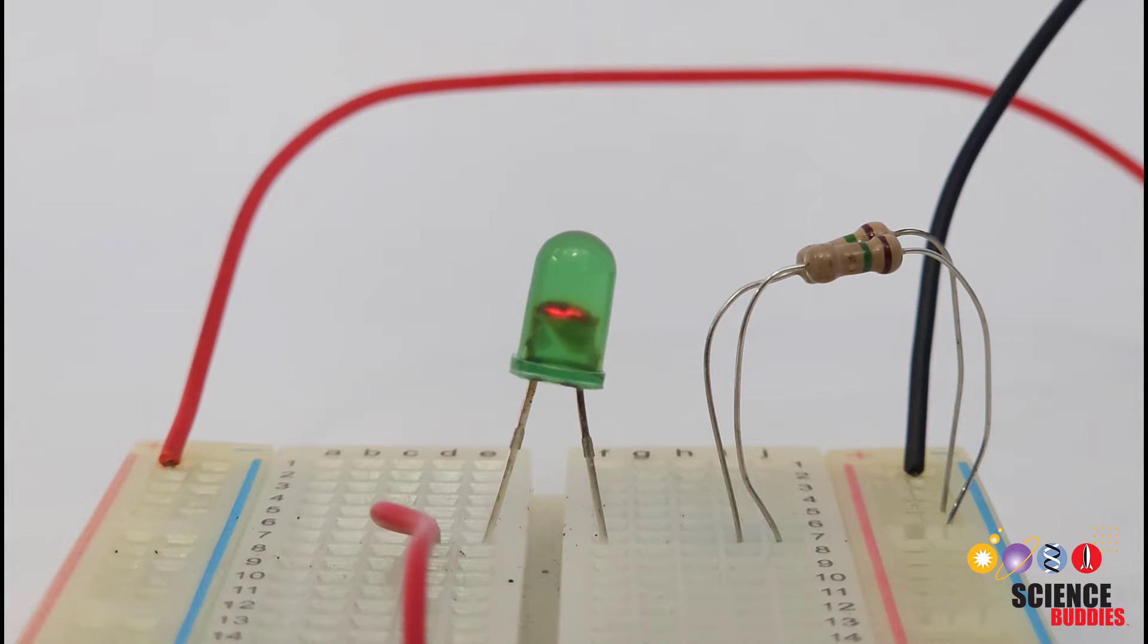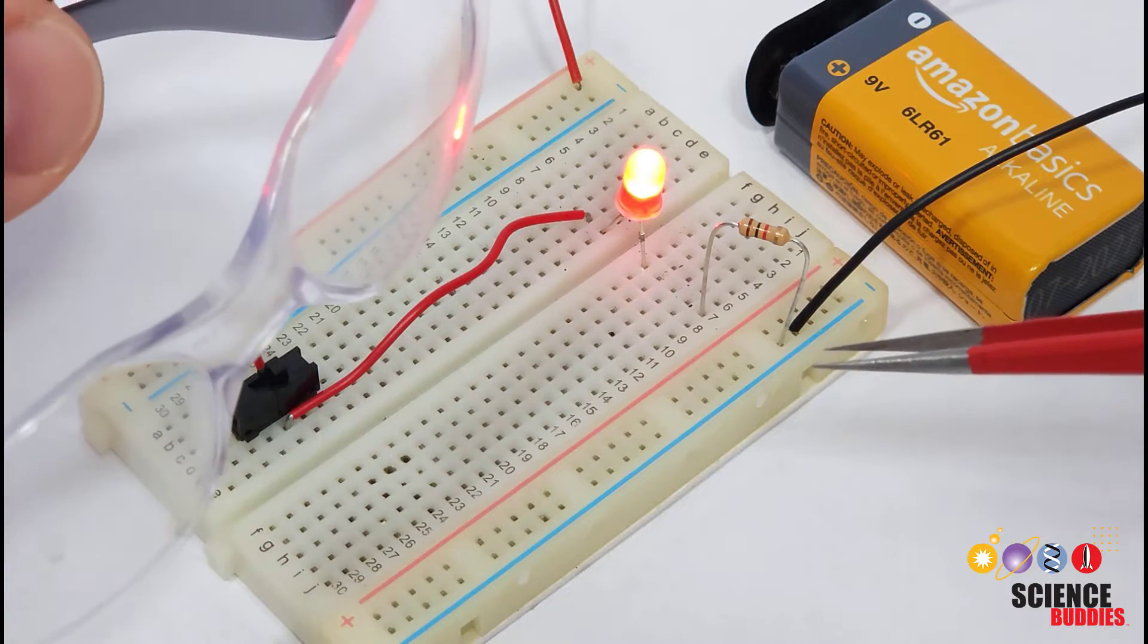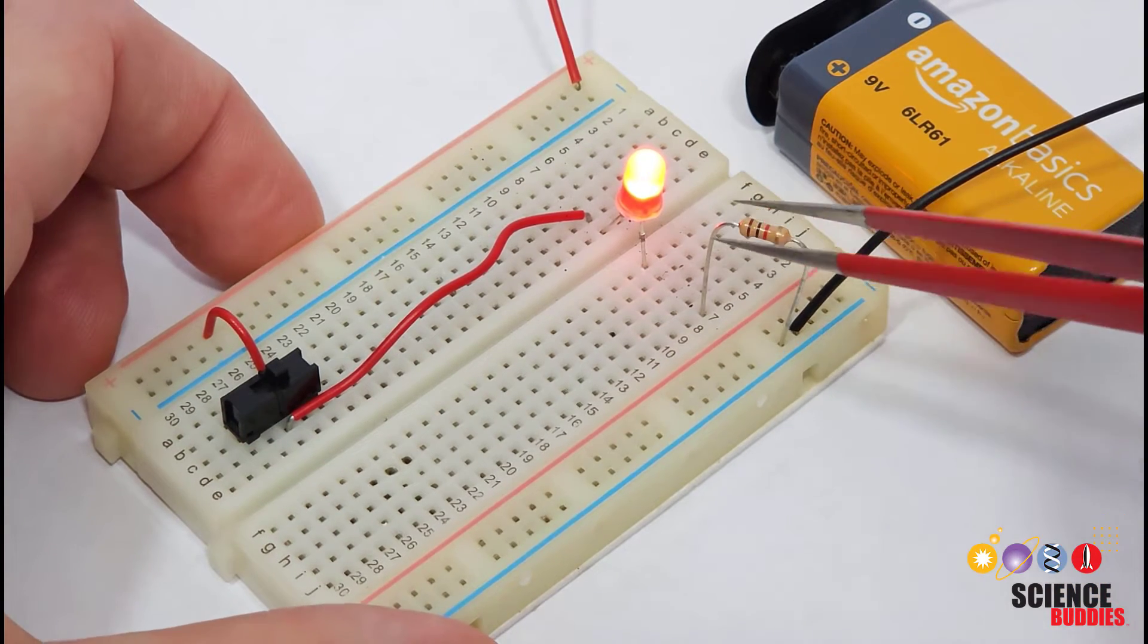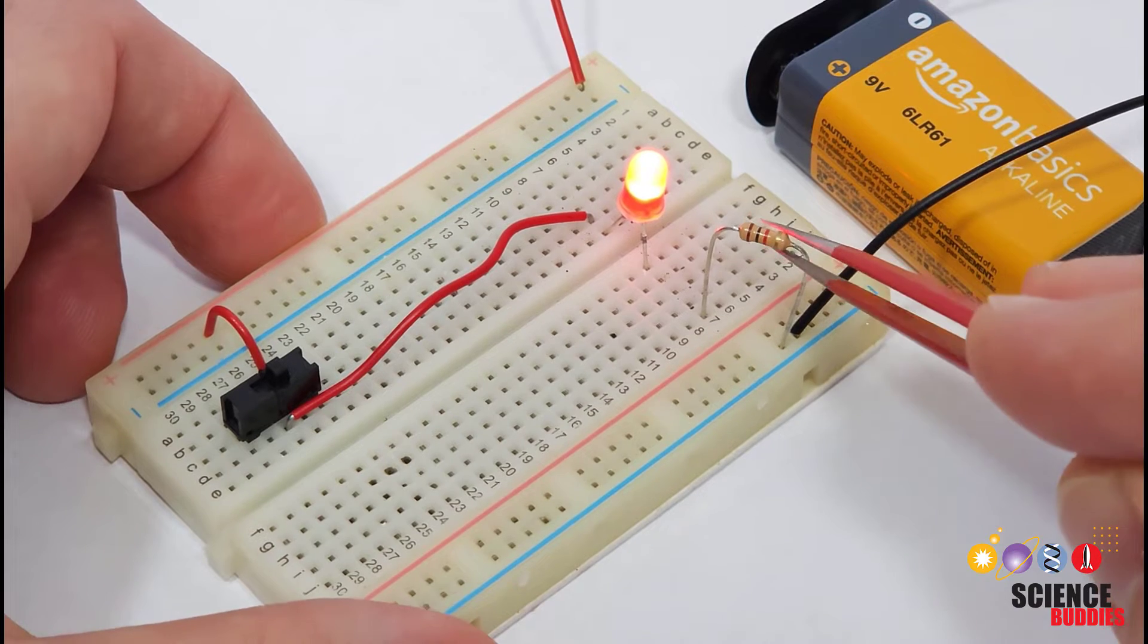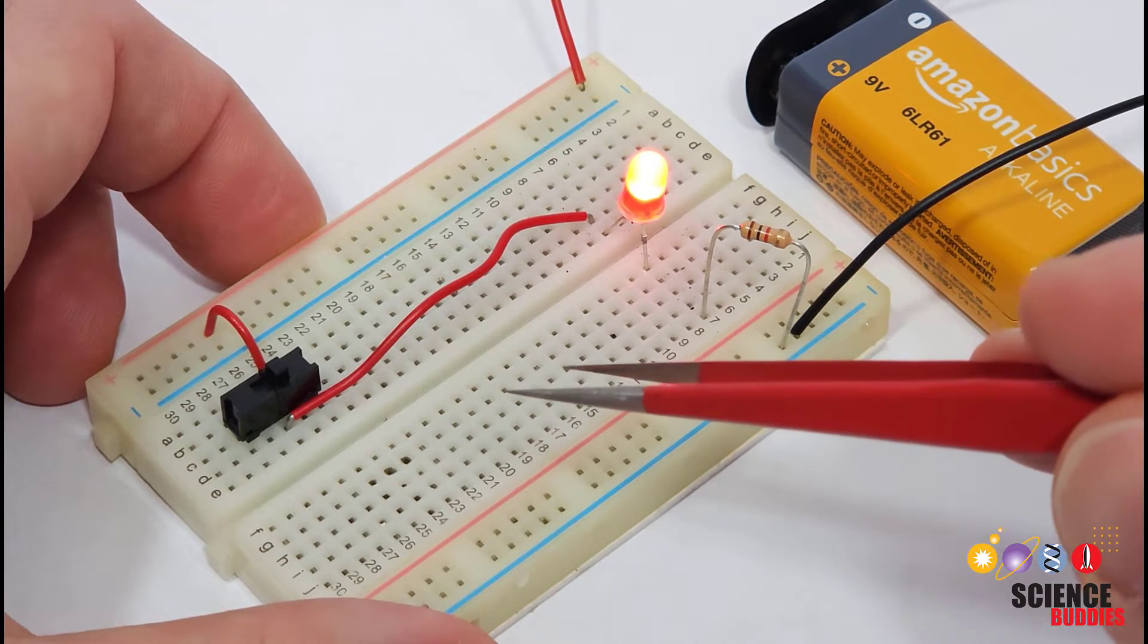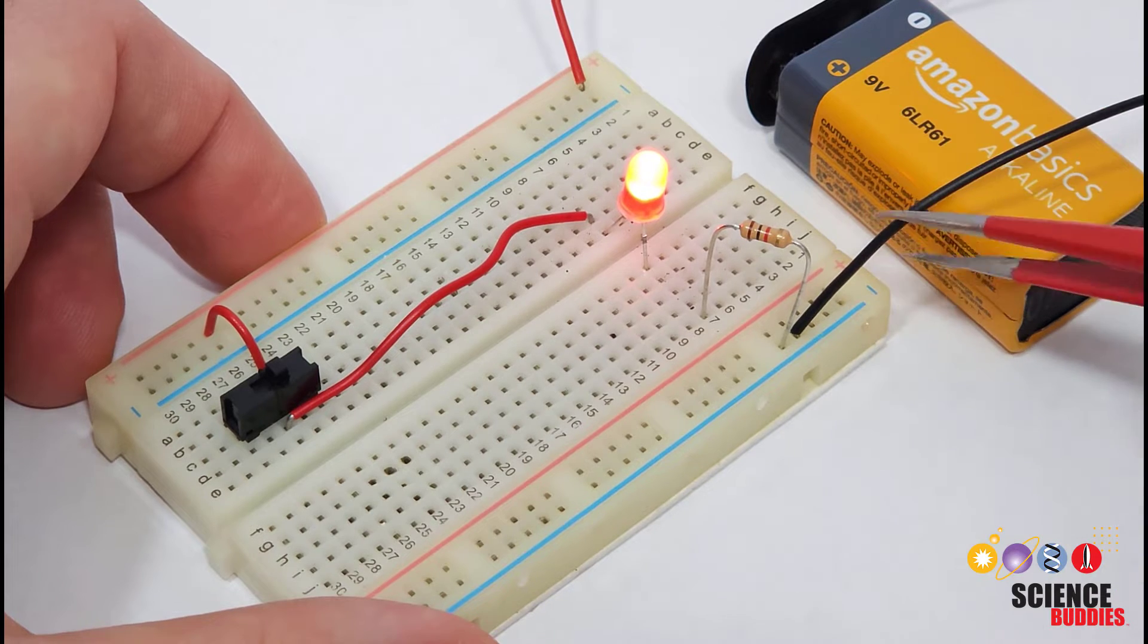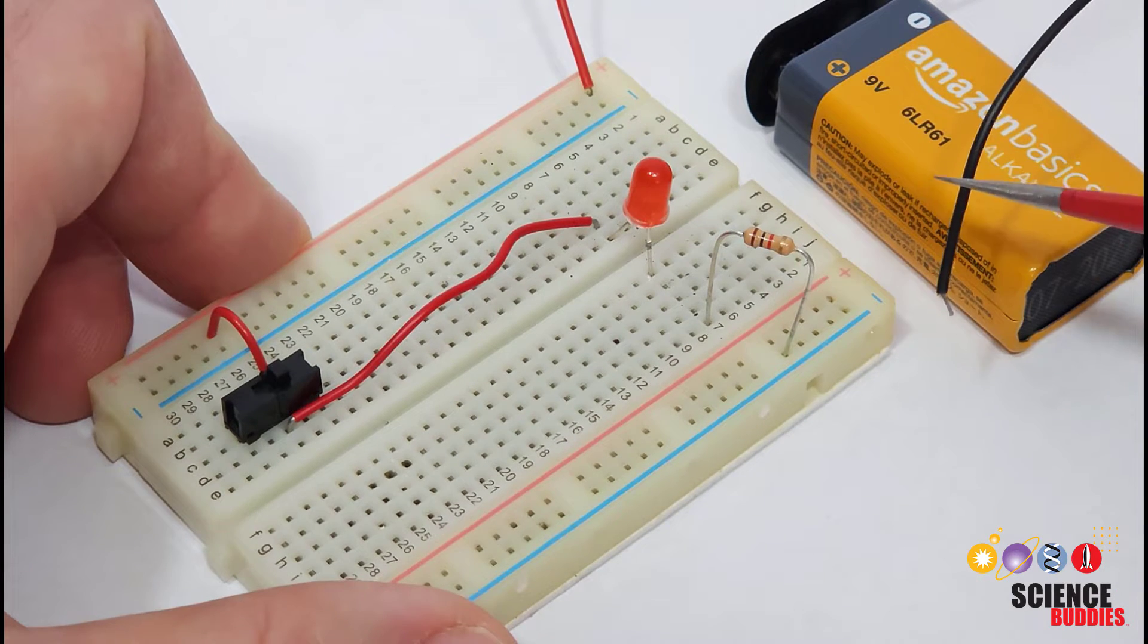There are some important safety notes to remember before we continue. Again, make sure you have eye protection on, and the components in the circuit can get hot. So after conducting a test, you should use tweezers to remove them from the breadboard and not your fingers. If at any point you need to disconnect power from the entire circuit, use tweezers to remove one of the battery wires.